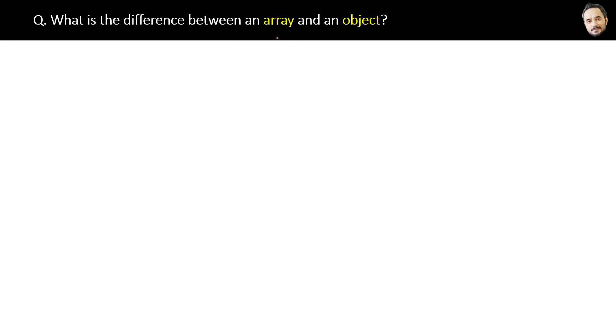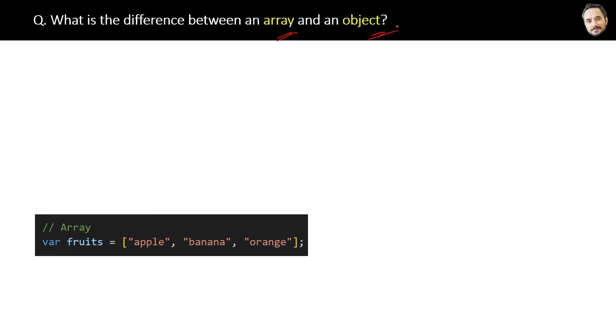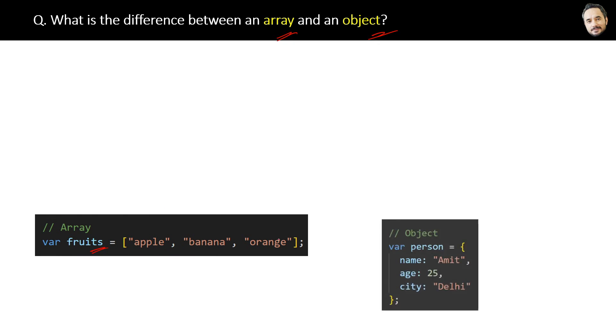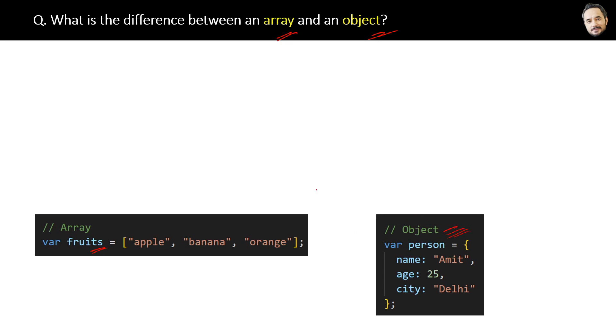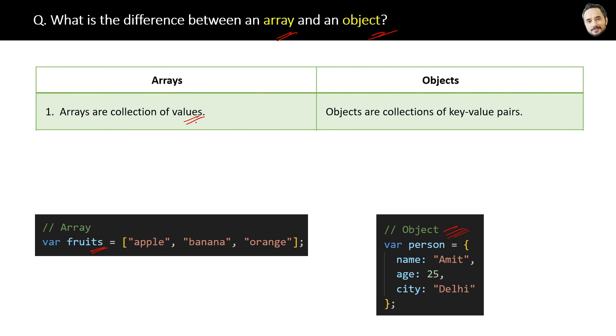What is the difference between an array and an object? Let's see the code first. Here you can see the code of an array and here is the code of an object. Now let's see the differences. First, arrays are collection of values, so all these elements in the array are values and nothing else.